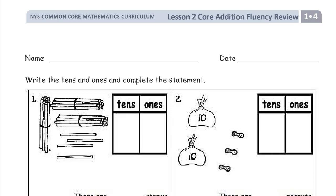Welcome to the homework for lesson two of module four. This is first grade. Get your name on here first. You might notice that this says lesson two core edition fluency review. These pages for this lesson, they aren't labeled by a problem set or homework or exit ticket as they usually are. But if you're going to get a couple of pages of homework for this lesson, they're probably going to be these two, so that's why I'm going to call them homework for lesson two.